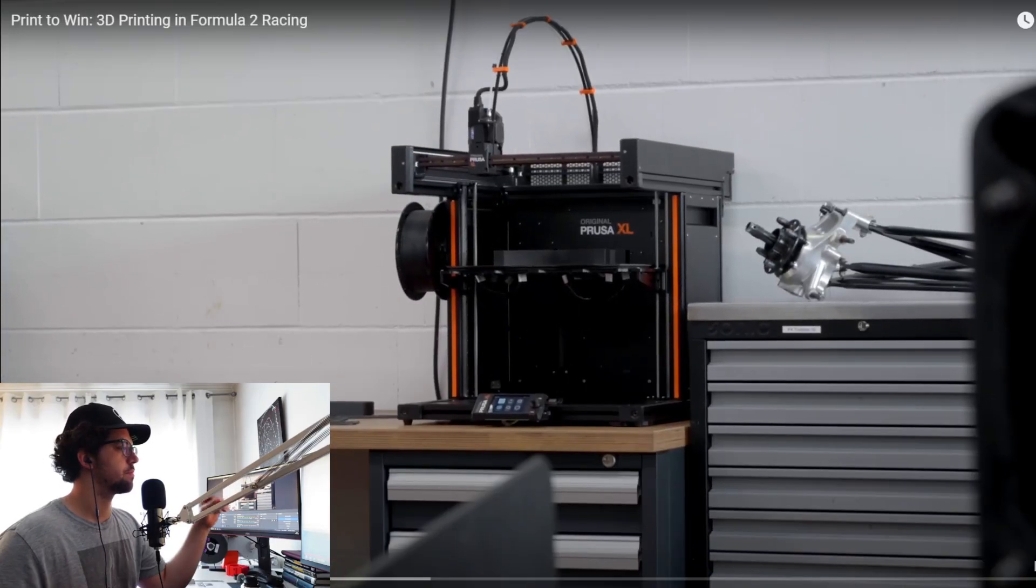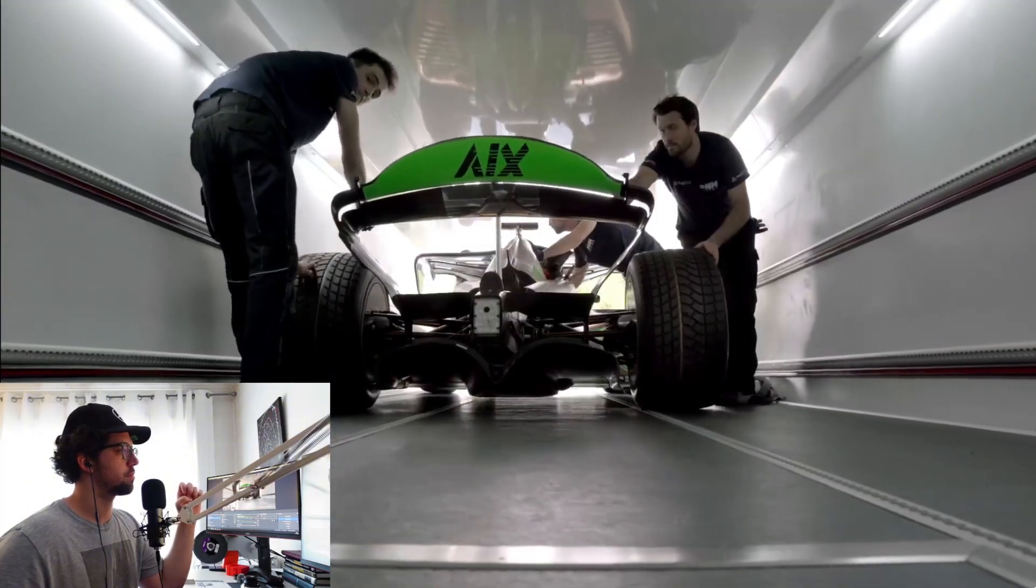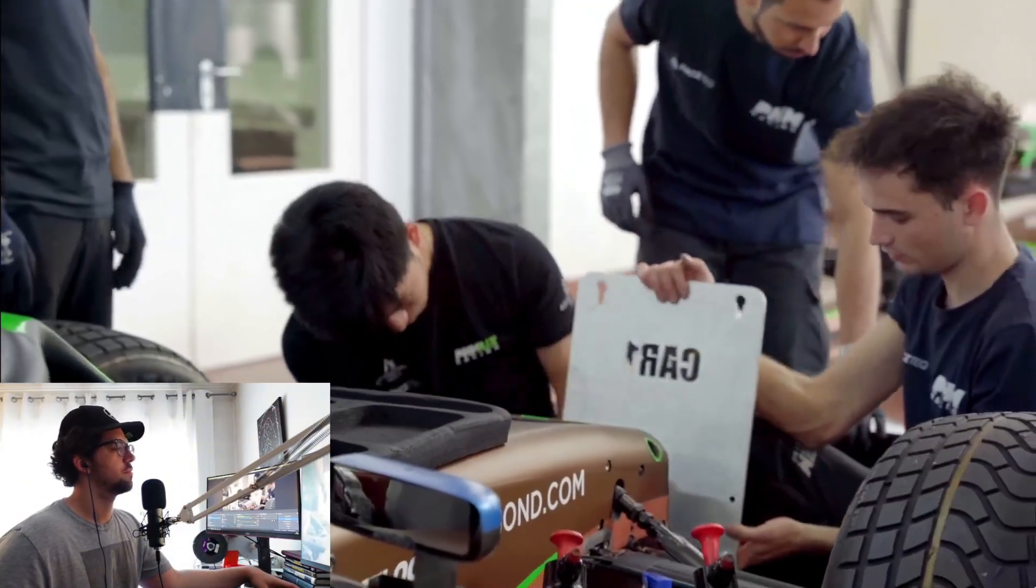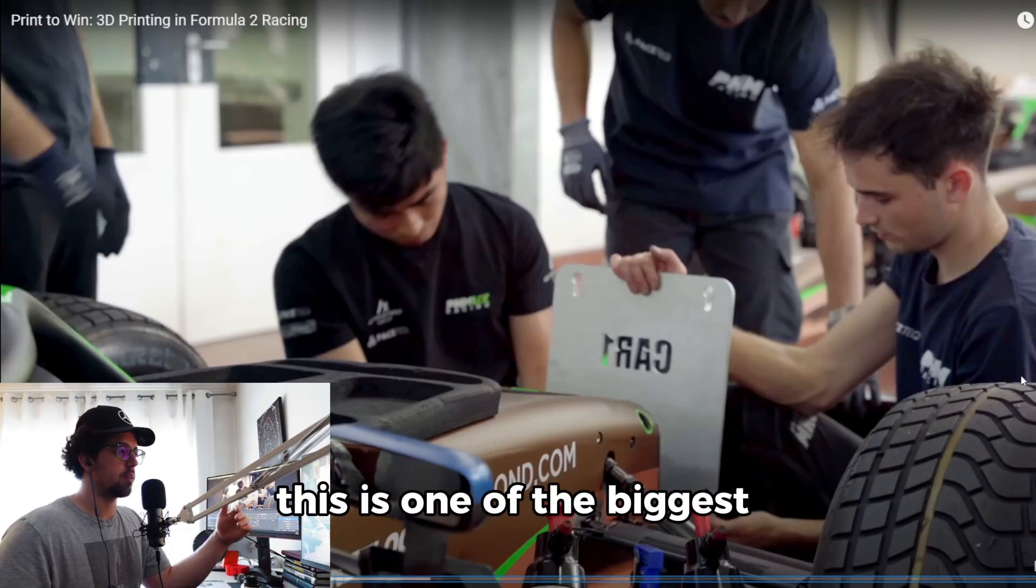The MK4 and the XL are mainly used for prototyping, produce all the parts in plastic, and then we really validate the concept, the model, and then we machine it in aluminium. This is one of the biggest advantages.